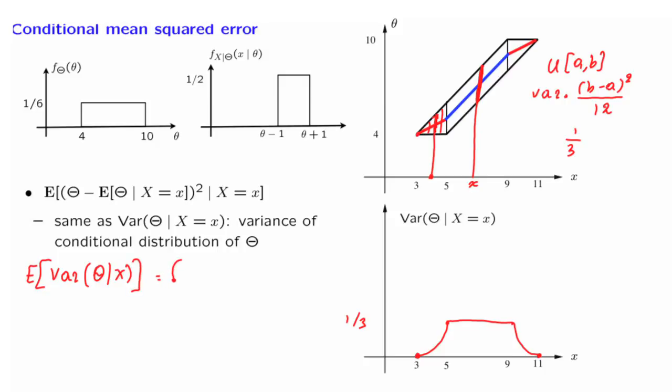This is going to be an integral of the conditional variance of theta integrated over all possibilities for x. But of course, each possibility of x has to be weighted according to the corresponding probability, or in this case, probability density function of x.